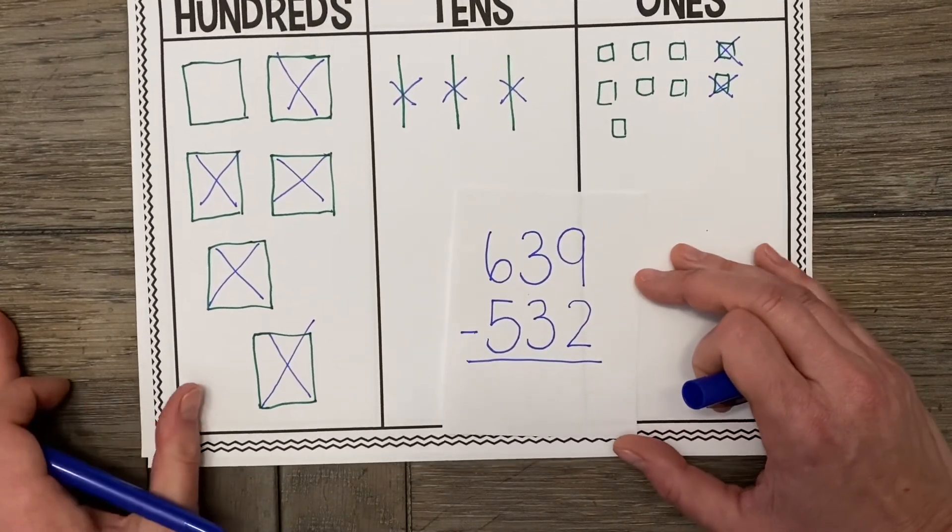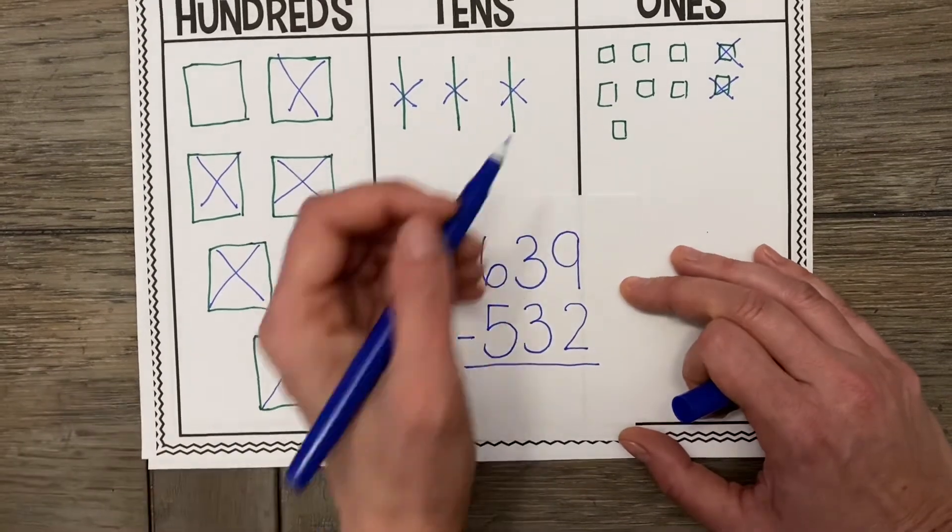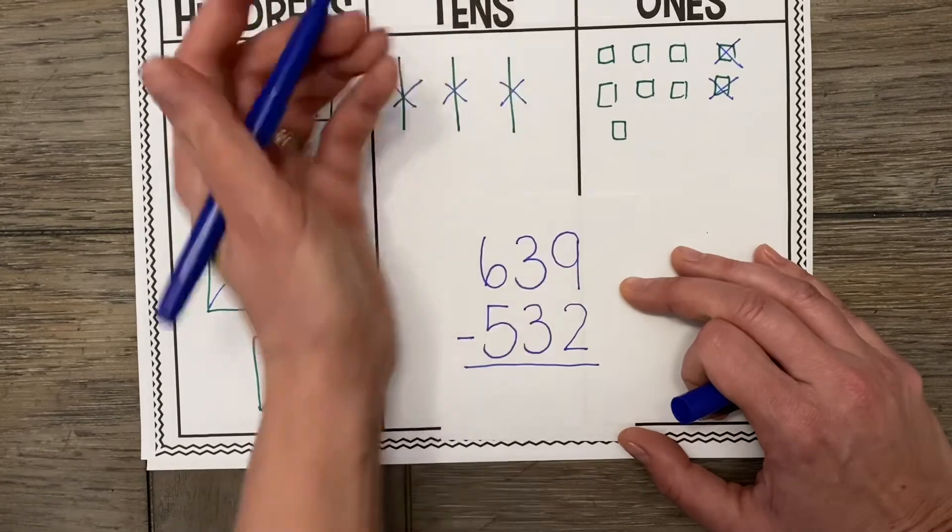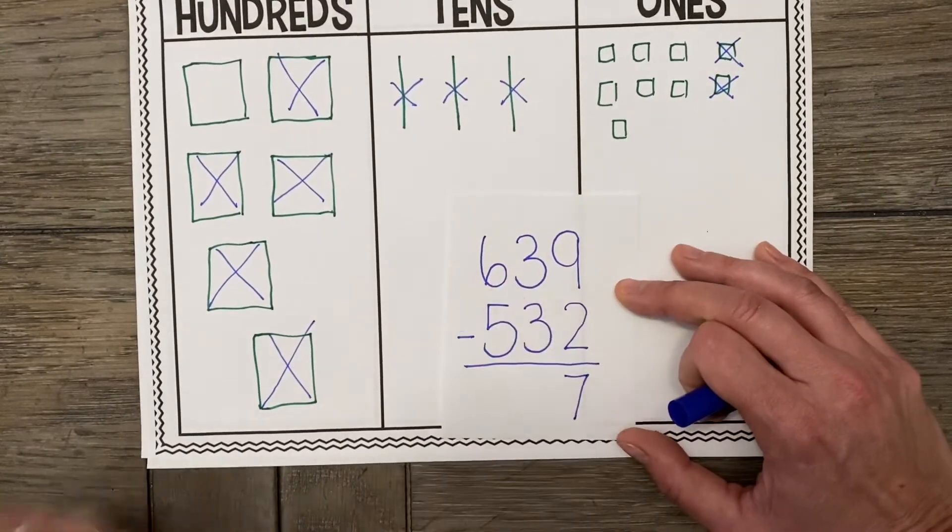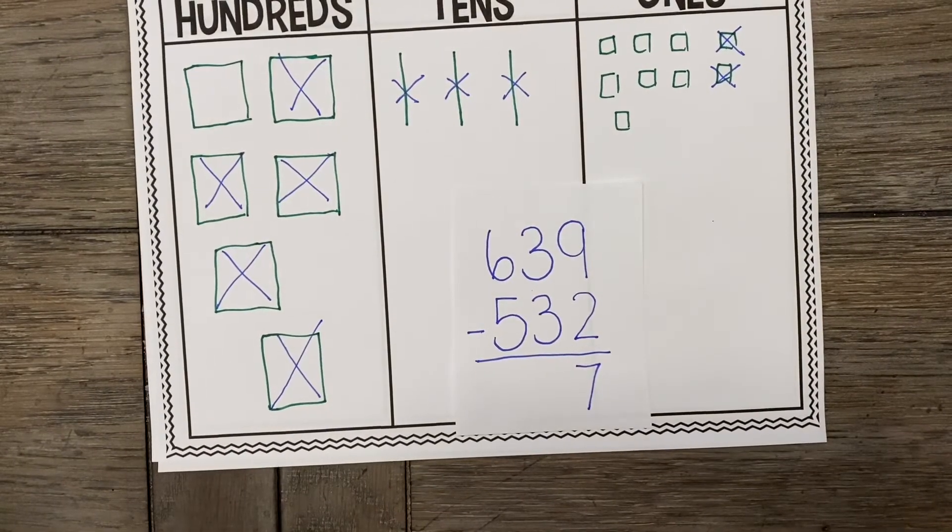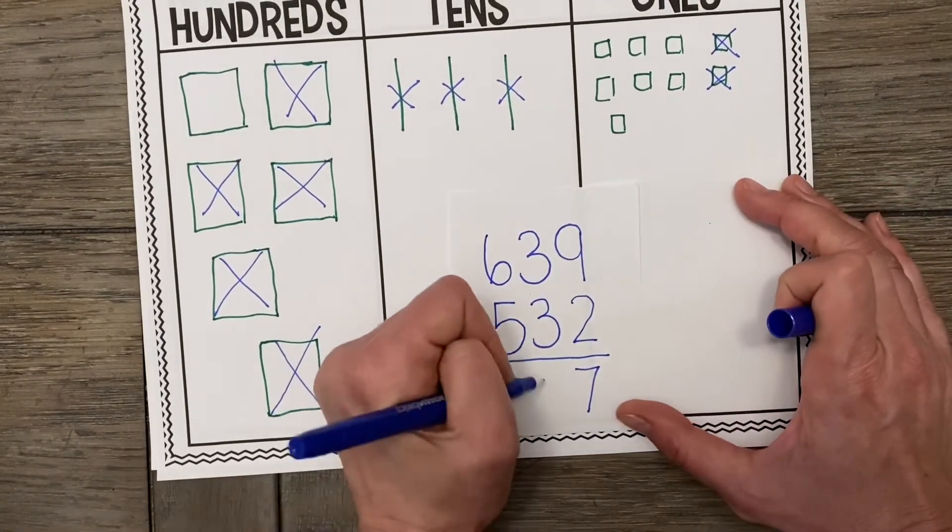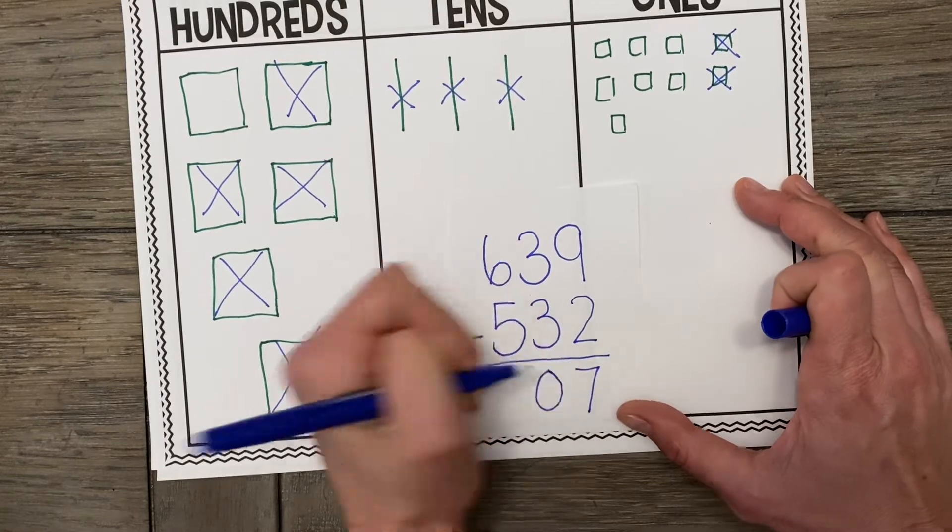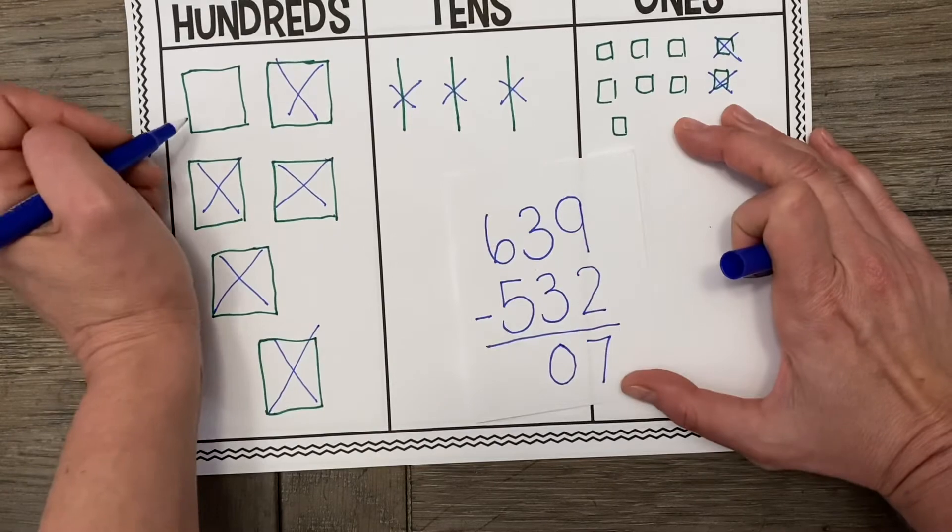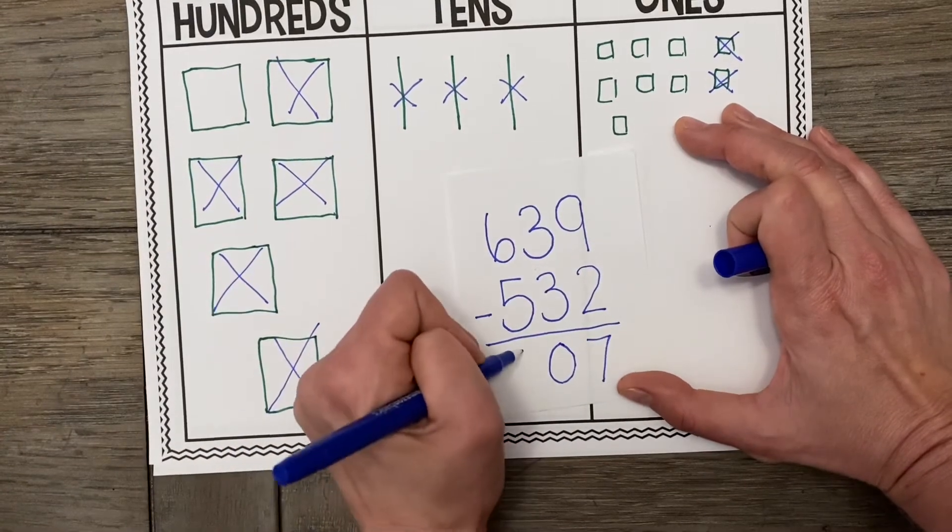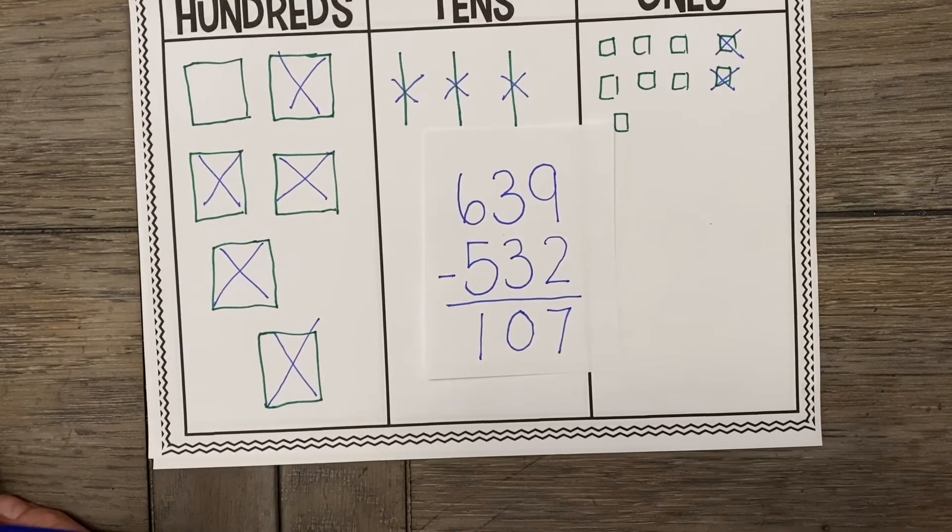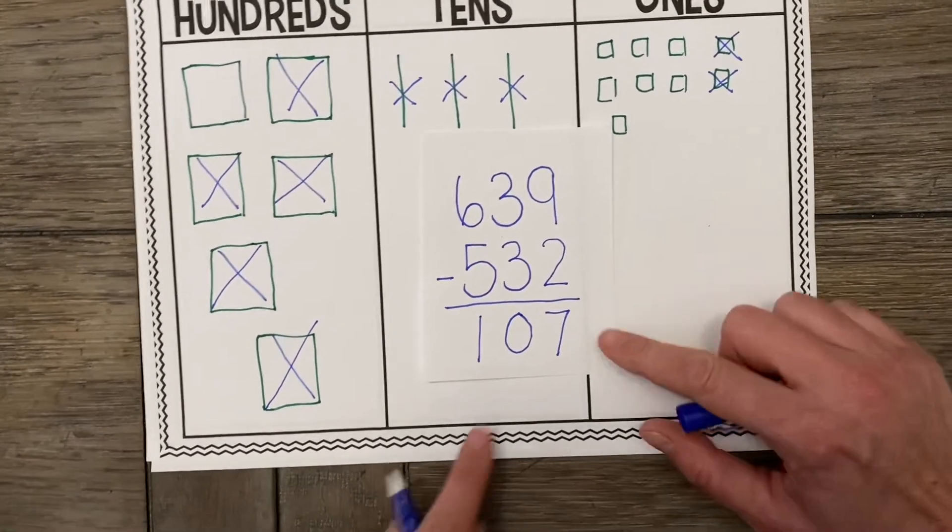Now starting with our 1s, let's see what we have left. 1, 2, 3, 4, 5, 6, 7. How many 10s do we have left? Oh, you're right. No 10s. So it's 0. And how many 100s do we have left? Oh, just one. So our answer to 639 minus 532 equals 107.